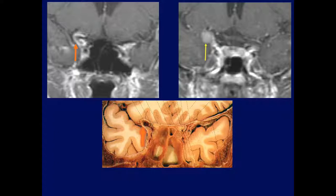This is a meningioma arising from the anterior clinoid on its lateral surface — here's the marrow. These usually don't have symptoms because they're away from the optic nerves, so this is kind of an incidental finding. Unless it gets very large, it'll be asymptomatic.